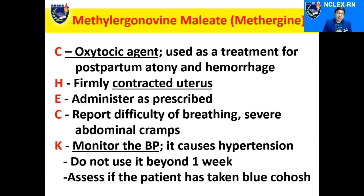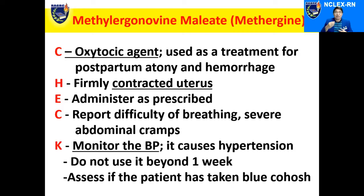It is also very important that since methyl ergonovin malleate promotes contraction of the uterus, before the drug is administered, the nurse should assess if the patient has taken blue cohosh. Blue cohosh, an herbal remedy, has an oxytocin-like effect, such that if the patient has taken blue cohosh, the effects of oxytocin will definitely increase. This could potentially endanger the patient for uterine rupture because the uterus reacts to two oxytocin agents taken together.